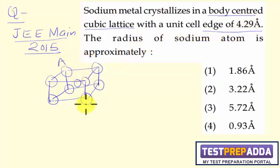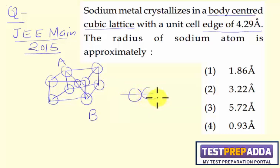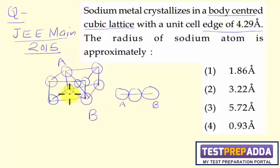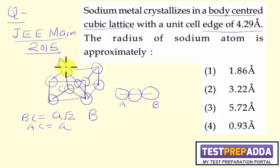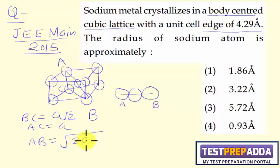Consider the body diagonal AB. The body-centered atom is here, with one corner atom at one end and another at the other end. Using the Pythagorean theorem — if BC is the face diagonal with length a√2 and AC is the edge with length a, then AB equals √(BC² + AC²) = √(2a² + a²) = a√3. So AB length is a√3.